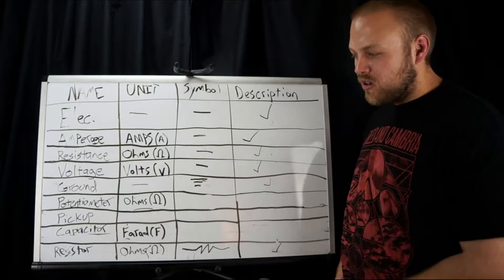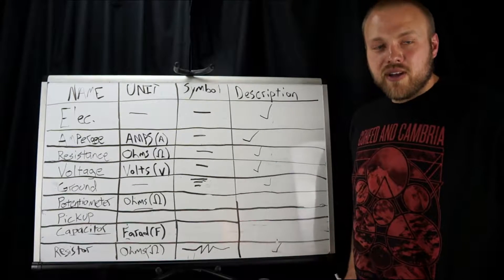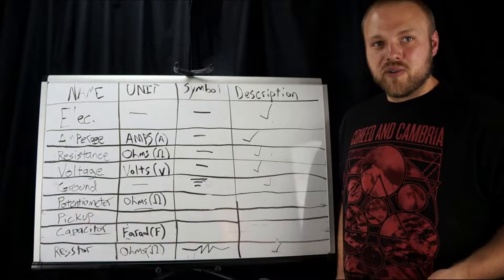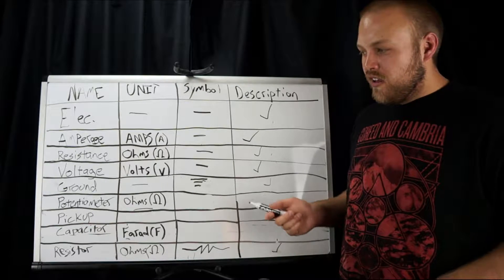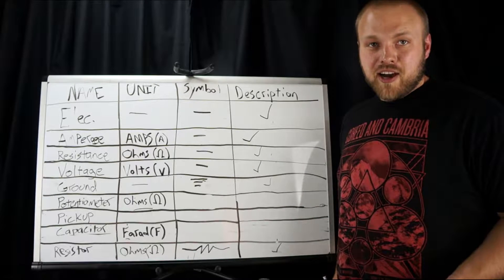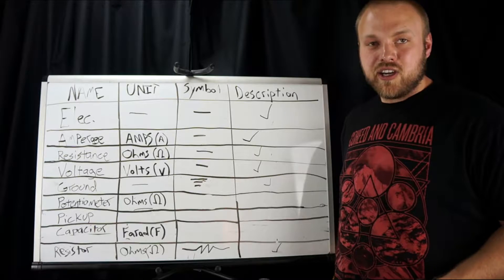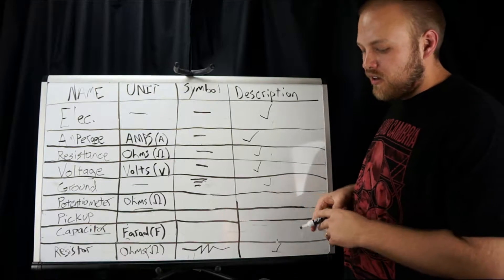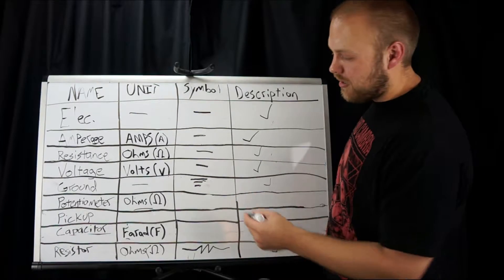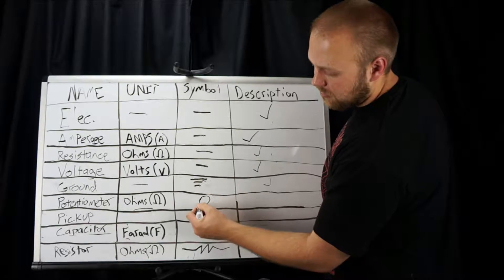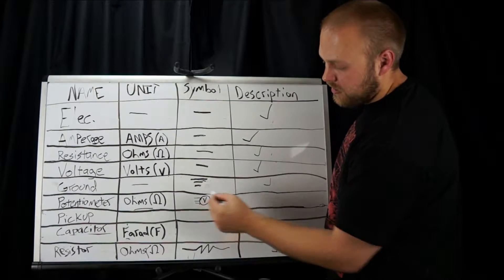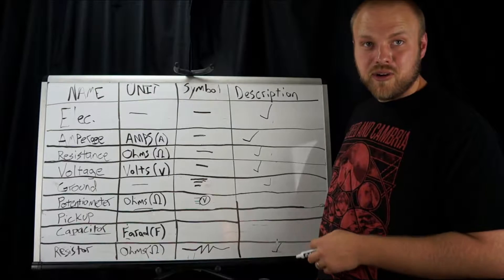So back up to potentiometers or we call them pots. They're just a variable resistor. They have this thing that sweeps and can change it from zero to whatever value resistor it is. For example, single coil guitars usually have 250k pots. That's 250 kilo ohm potentiometers. Humbuckers would generally have 500k pots. Their symbol, the way I'm gonna draw them, is a circle and it's gonna have three lines. Those are where you would connect wires to. And then I'll put either a V or a T in it for volume or tone respectively.